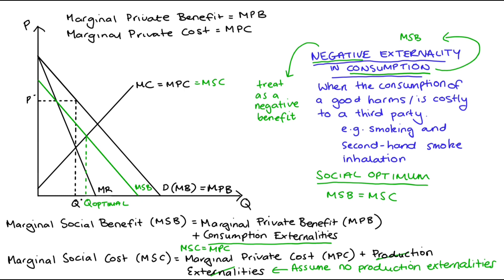I'll call the quantity at that intersection Q-optimal. Since the monopoly produces Q-star, which is less than Q-optimal, we do have some deadweight loss shown by the red area. We can explain this deadweight loss by noting that from Q-star to Q-optimal, the marginal social benefit of consumption is greater than the marginal social cost of production, but the monopoly has not produced those units — so we've underproduced relative to the social optimum.